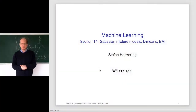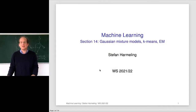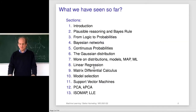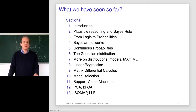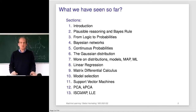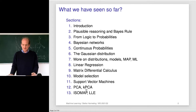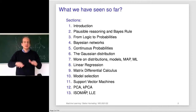Welcome everyone to our next lecture on machine learning. Today we talk about k-means and many variants of it, as well as how to derive it and the math behind it, which shows us some more general principles. We've seen lots of different topics recently, in particular two examples of unsupervised learning — methods for nonlinear or linear dimensionality reduction, where we were trying to find a subspace to describe our complicated data set.